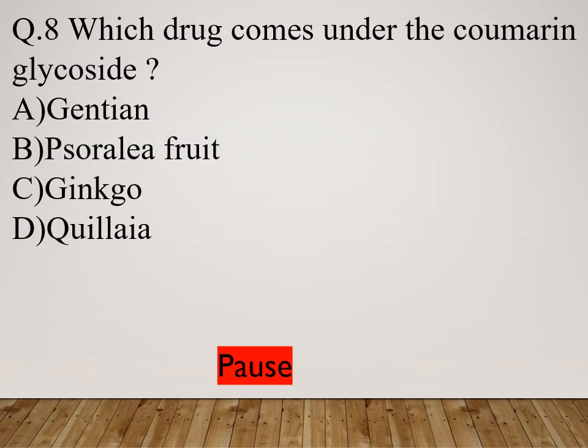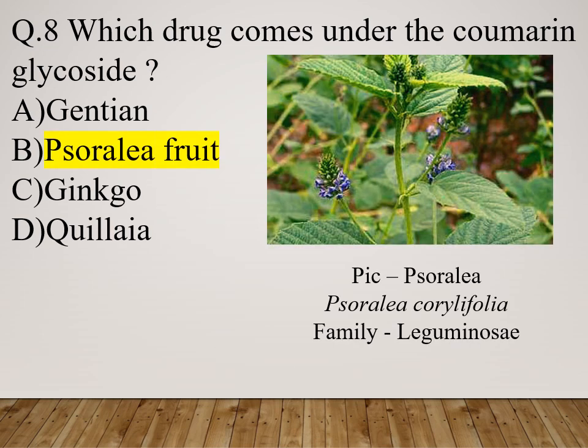Question 8: Which drug comes under the coumarin glycoside? Option A: Gentian. Option B: Soralia fruit. Option C: Ginkgo. Option D: Qualia. The right answer is Soralia fruit. Psoralea corylifolia belongs to family Leguminosae.